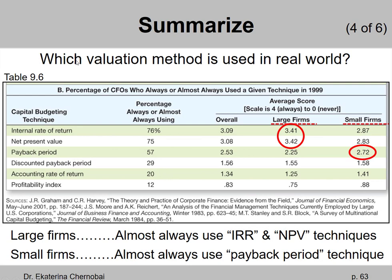In real life, which valuation method is used in the real world? A survey in 1999 of different companies showed that large firms prefer using the IRR or the net present value approaches. Small firms like using the payback period, which probably makes sense because small firms don't deal with large amounts of money, and the payback period — which completely ignores discounting — is good enough for small firms, where discounting would make a difference of just maybe a few cents.